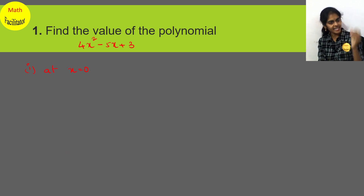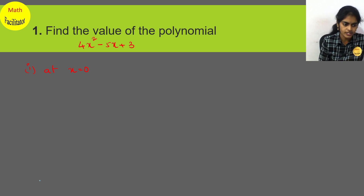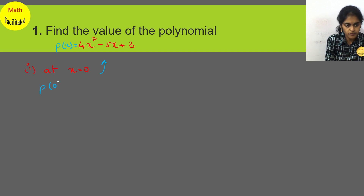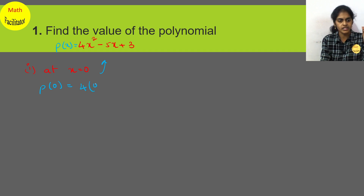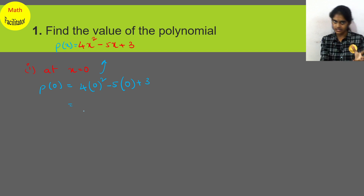At x equal to 0 means when you substitute x equal to 0, what is the value of this polynomial? Suppose I take this polynomial as p(x). So p(0) means in the place of x I will substitute 0. So 4 into 0² minus 5 into 0 plus 3 equals 0 minus 0 plus 3. The final answer is 3.